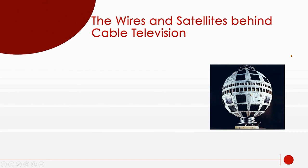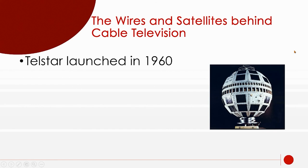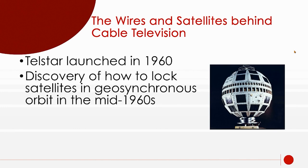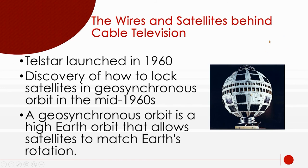Another thing that helped distribution was satellites. Telstar communication satellites launched in 1960. The idea of geosynchronous orbit in the 1960s was a really big deal — a satellite that goes as fast as the Earth so it's always in the same place. We can always point up to it and know where that satellite is. If we didn't have Telstar and satellites, we would not have had all the different programming on cable for years and years. Geosynchronous orbit is a high orbit — about 24,000 miles up — matching the rotation of the Earth.